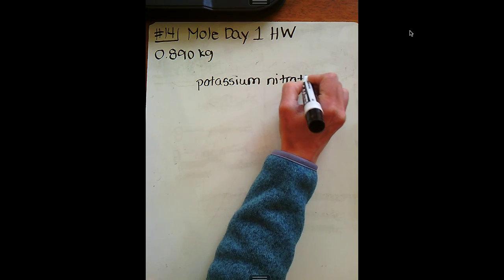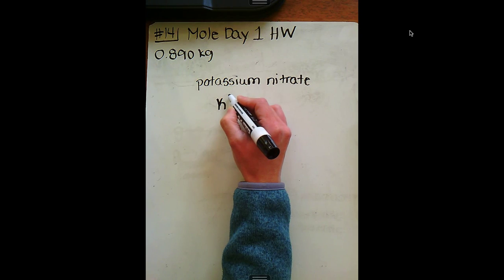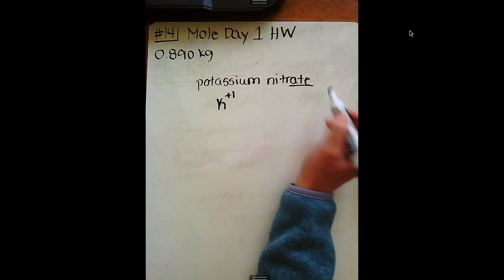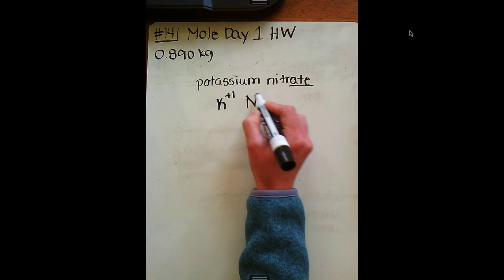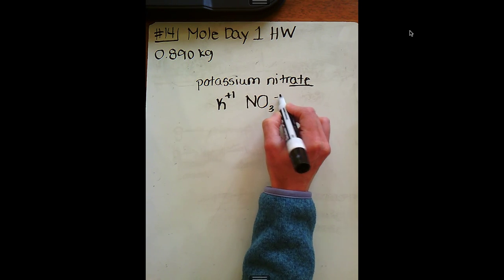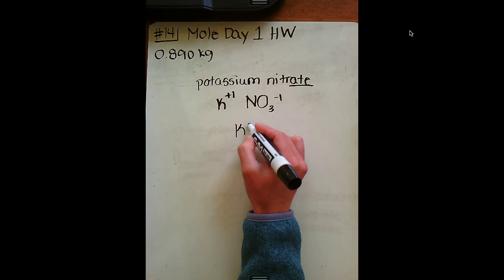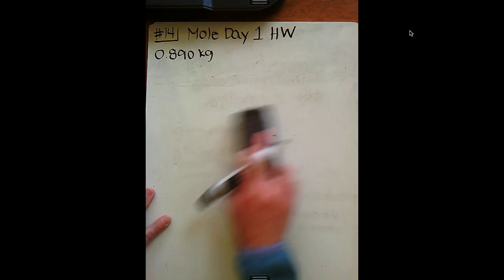If you look at your periodic table, potassium is represented with a K and it is in group one, which means it has a plus one charge. Nitrate ends in ATE, meaning it's a polyatomic ion. If you look at your sheet, you're going to see that is NO3 with a negative one charge. So to make your charges cancel out, that would simply be KNO3. Let's go ahead and write that out because that becomes important in a minute.